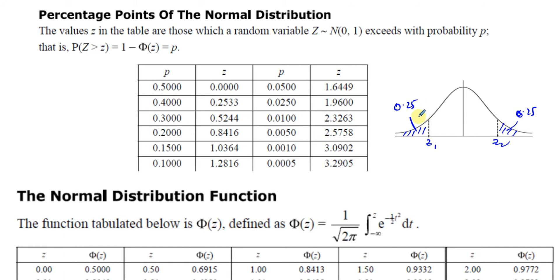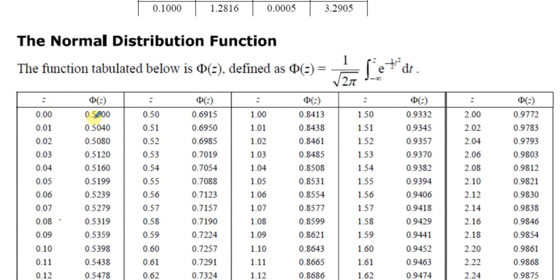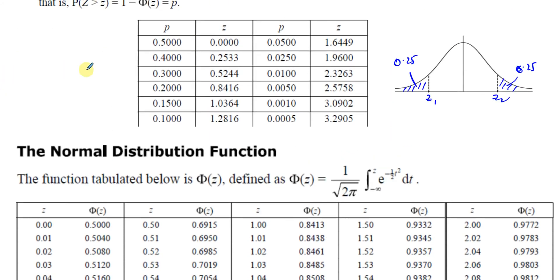Since we can't find 0.25 in the upper table, I have to go to the table below. That table gives the area to the left of the Z value, starting from positive values. I need to find a Z value such that the area to the left is 0.75 - because once I find Z2, I can find Z1 since they're symmetrical and Z1 will be the negative of Z2. So I need to look for an area of 0.75 in the table.